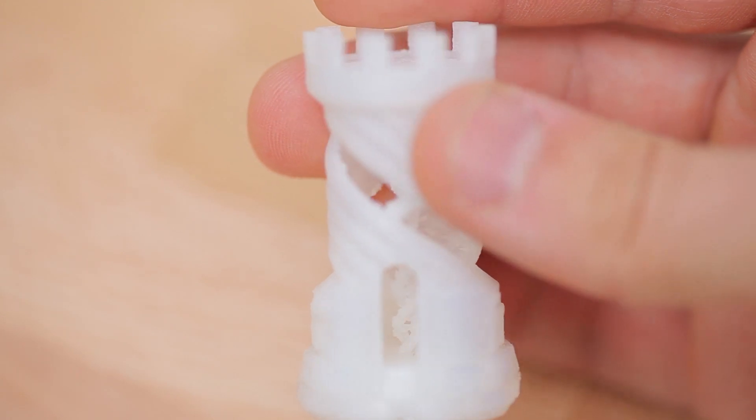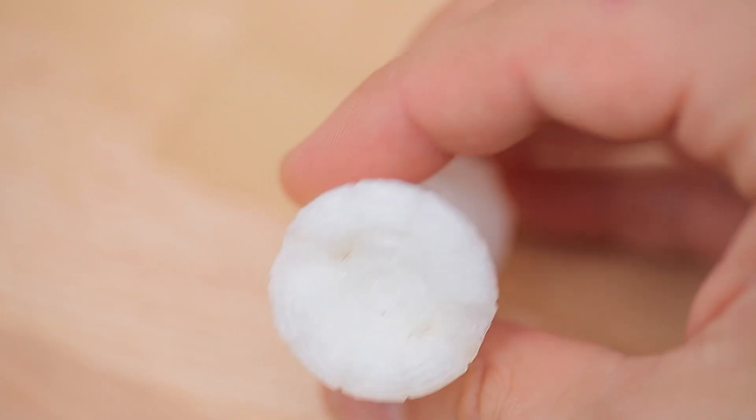The center helix is all there and looking pretty sharp, and what's really amazing about nylon is how well it handles overhangs. The bottom of this part has absolutely no strings.